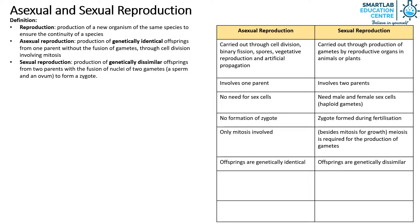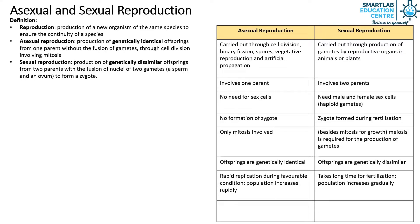In asexual reproduction, there is rapid replication during favorable conditions and the population increases rapidly. Whereas in sexual reproduction, it takes a long time for fertilization and the population increases gradually. Asexual reproduction can occur in plants and simple organisms, while sexual reproduction can occur in plants and more complex organisms.